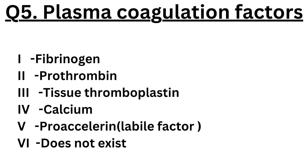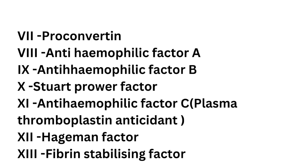Question number five: plasma coagulation. There are 13 coagulation factors. Factor I: fibrinogen. Factor II: prothrombin. Factor III: tissue thromboplastin. Factor IV: calcium. Factor V: proaxillary or labile factor. Factor VI: does not exist. Factor VII: proconvertin. Factor VIII: anti-hemophilic factor A. Factor IX: anti-hemophilic factor B. Factor X: Stuart-Prower factor. Factor XI: anti-hemophilic factor C or plasma thromboplastin antecedent. Factor XII: Hageman factor. Factor XIII: fibrin stabilizing factor.